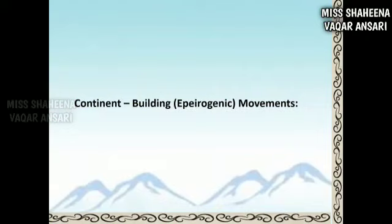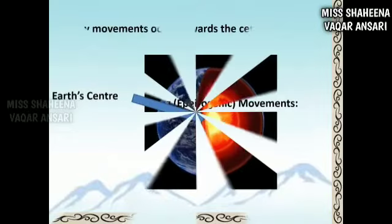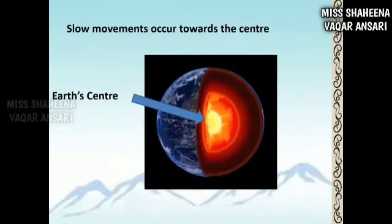Continent building — epirogenic movements. Vertical movements are mainly associated with the formation of continents and plateaus; they are also called epirogenic movements. Epirogenic movement is strictly a vertical movement of the continent and acts along the radius of the earth. Due to this process, sea level rises and new plate materials are modified.